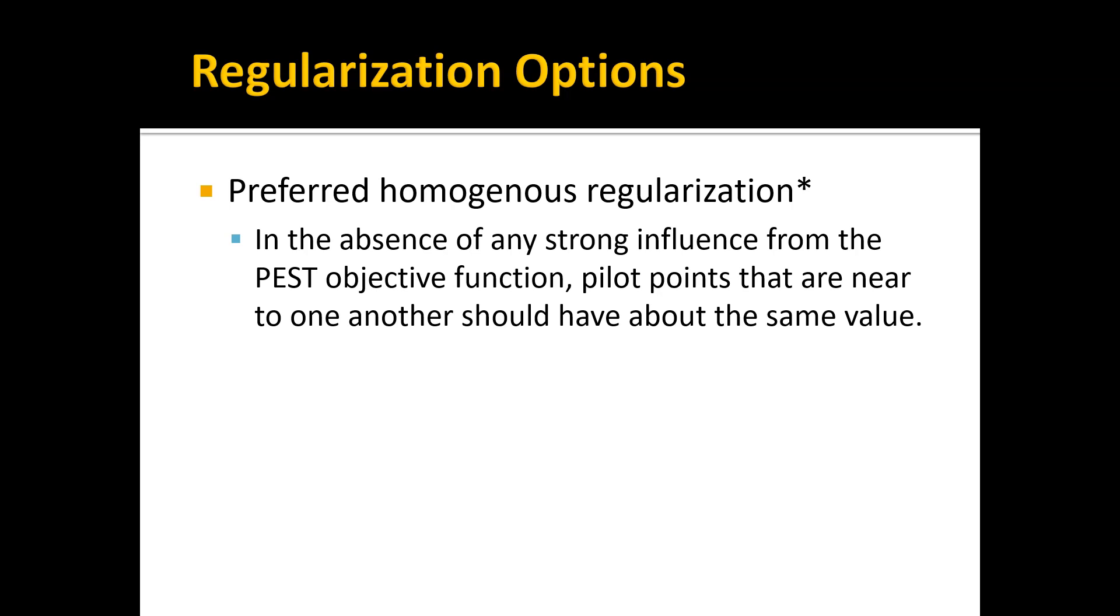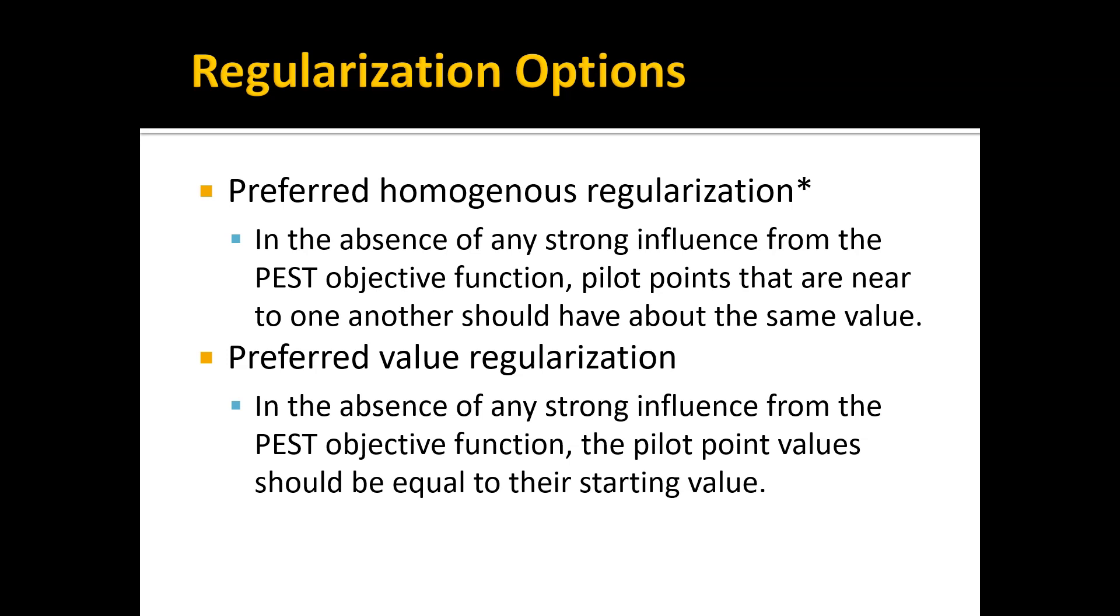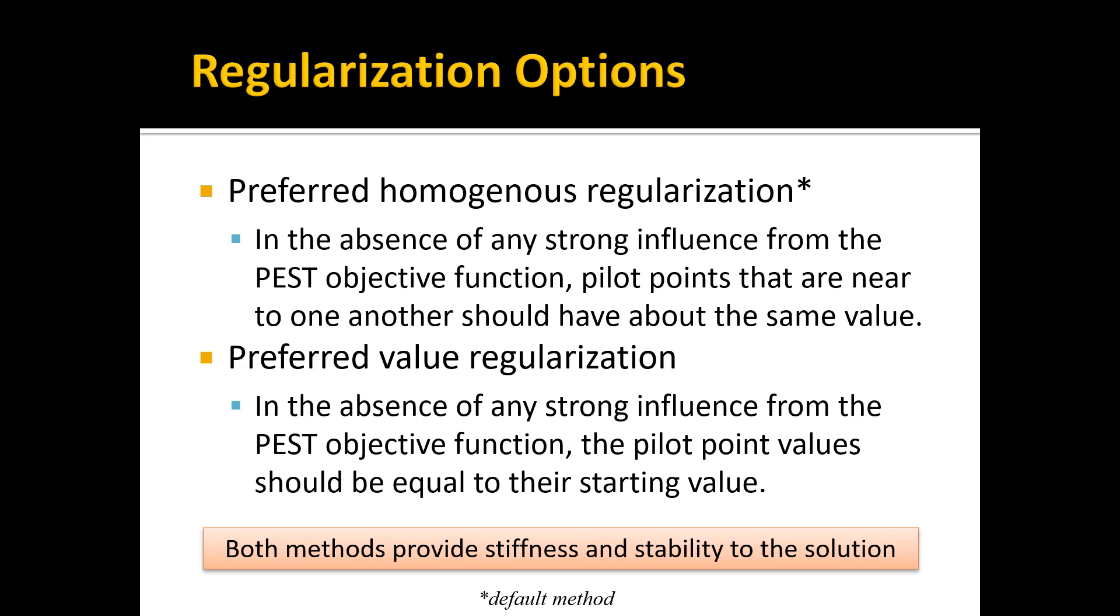The pilot point method effectively adds stiffness to that surface—you can think of it as like a piece of sheet metal as opposed to a loose piece of cloth. That stiffness from this regularization process is what makes it stable. Another method is preferred value regularization. In this case, you assign a starting value for each of your pilot points, and in the absence of any pull from the objective function based on nearby observations, the pilot point values are biased to be equal to or close to their starting value. Both methods provide stiffness that provides stability, but the first one, preferred homogeneous regularization, is the default method.